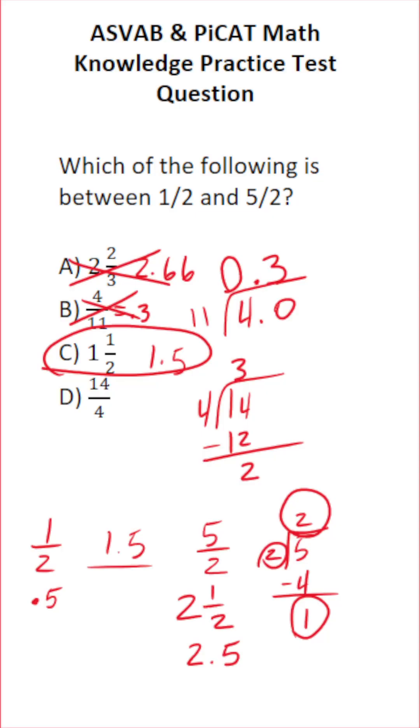We have enough to write our mixed number. This is 3. This 2 is gonna be our numerator. This 4 is gonna be our denominator. This is 3½. 3½ is too big, so it's not between 1½ and 5 over 2.